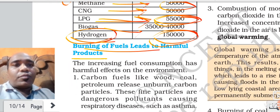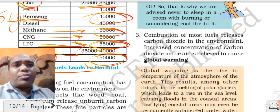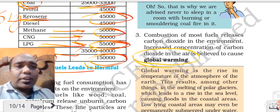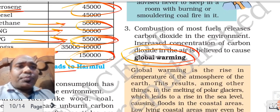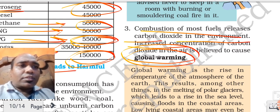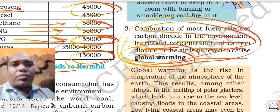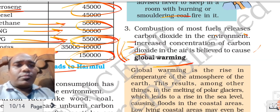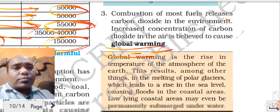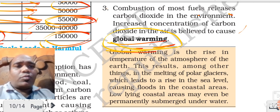Burning of fuel leads to harmful products. Burning of fuel produces air pollution and many problems. Global warming also takes place due to all this. Combustion of most fuels releases carbon dioxide into the environment. Increased concentration of CO2 causes global warming. Global warming is melting glaciers, due to which sea levels are rising.